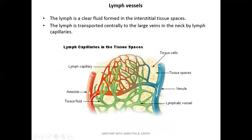Lymph is a clear fluid produced in the interstitial tissue spaces. It is carried by lymphatic capillaries, which form lymphatic vessels, and ultimately drain into veins. Any defect to the lymphatic vessels can lead to formation of edema — that is, collection of fluid in the interstitial spaces.